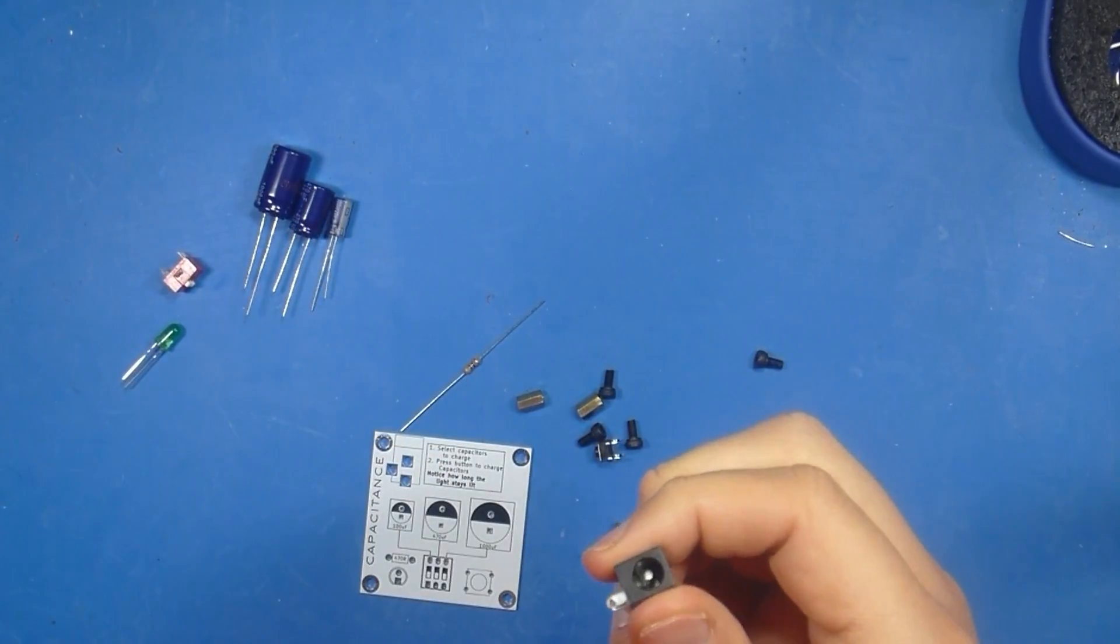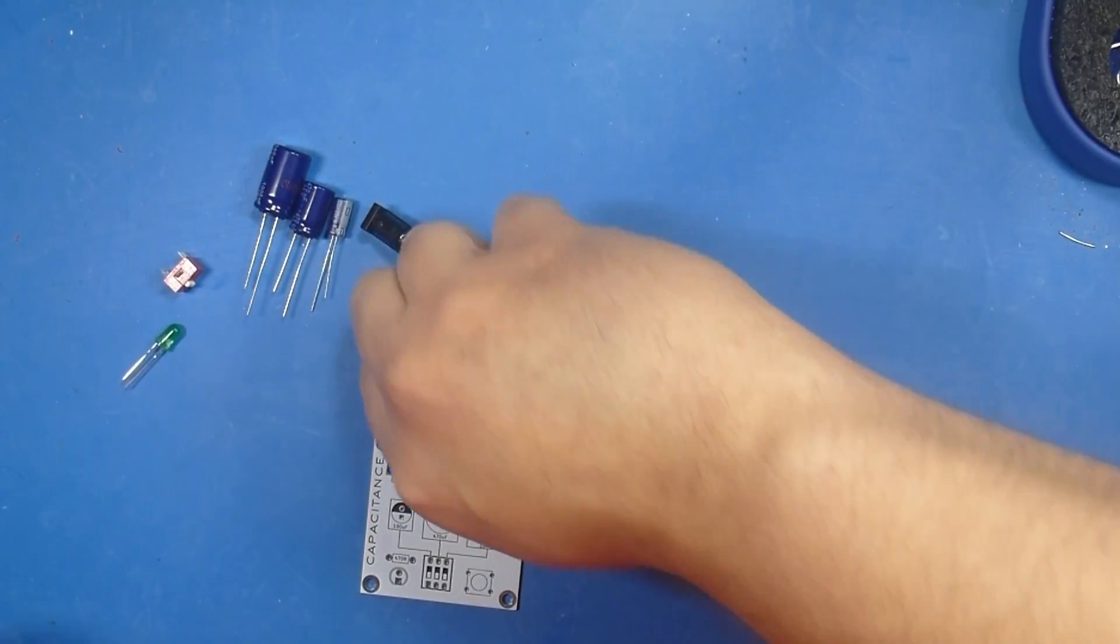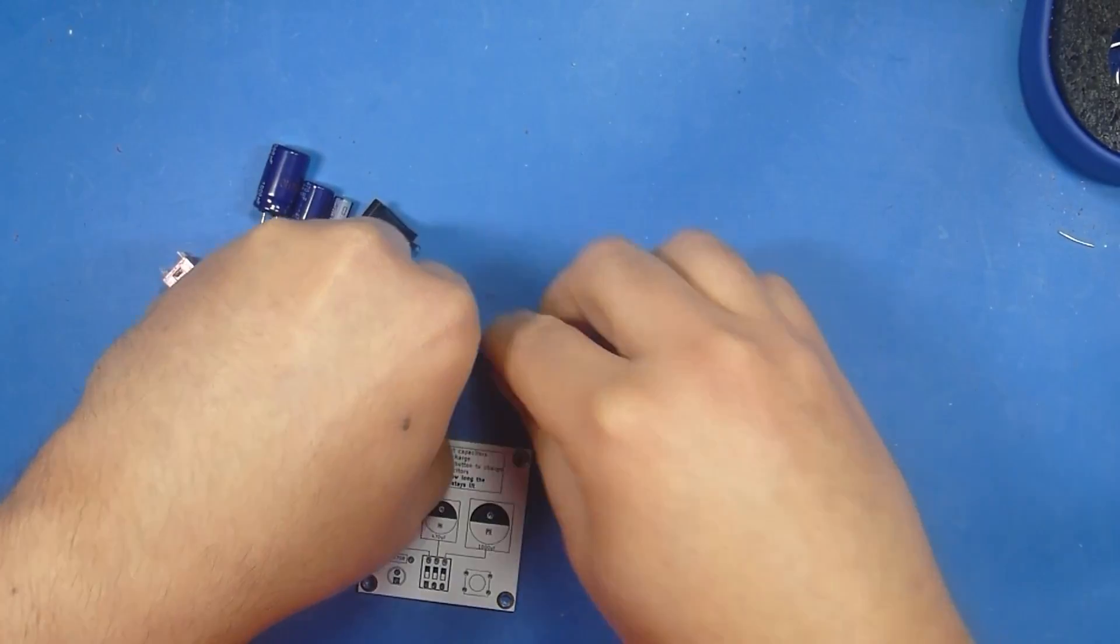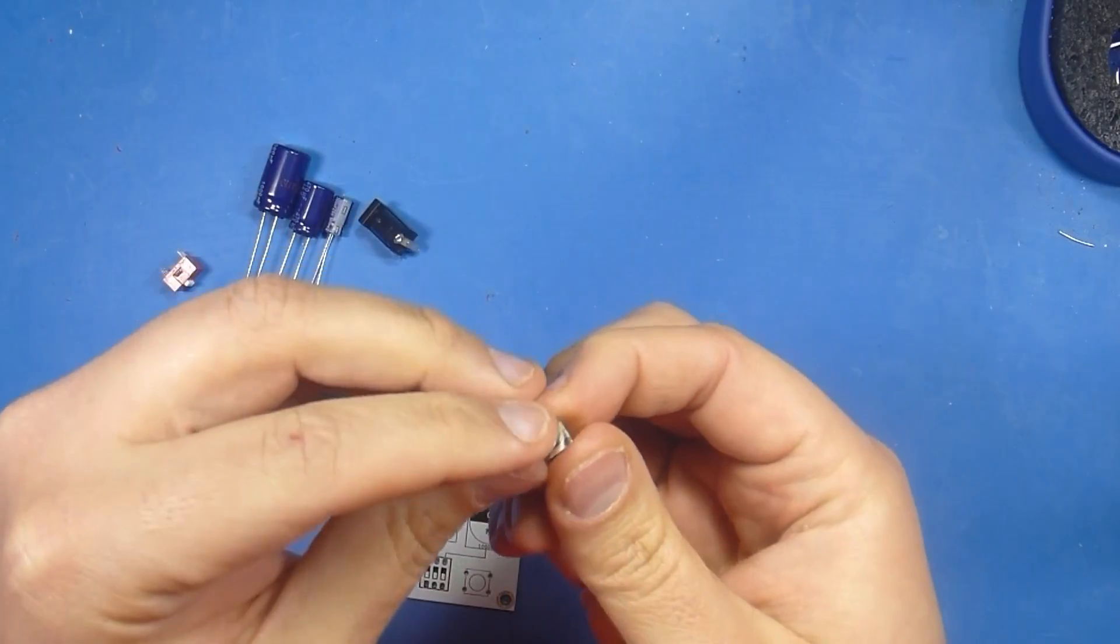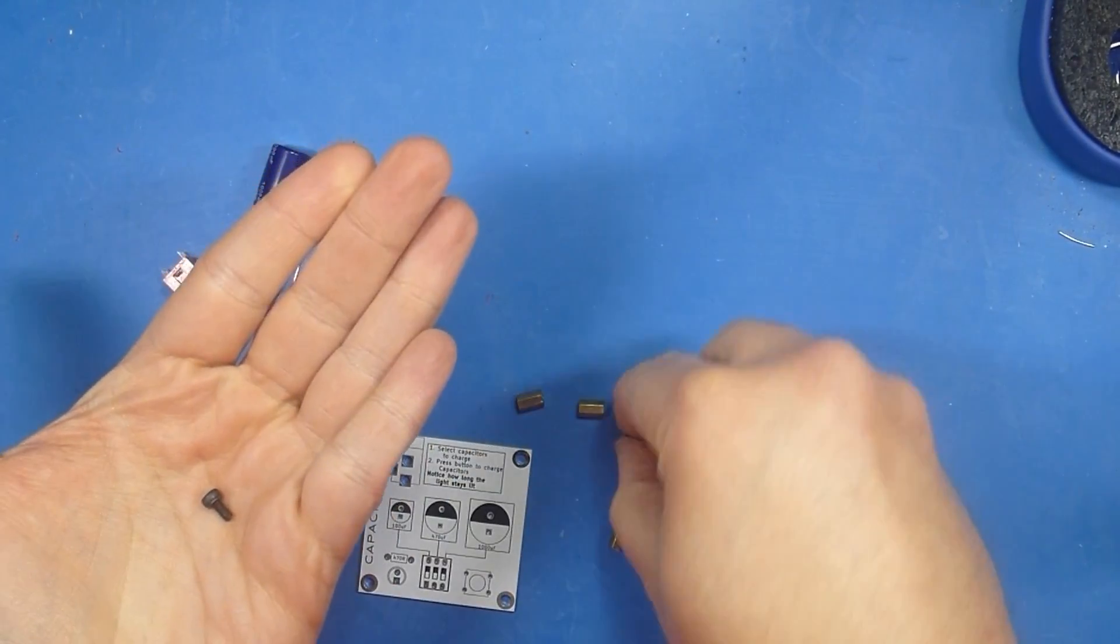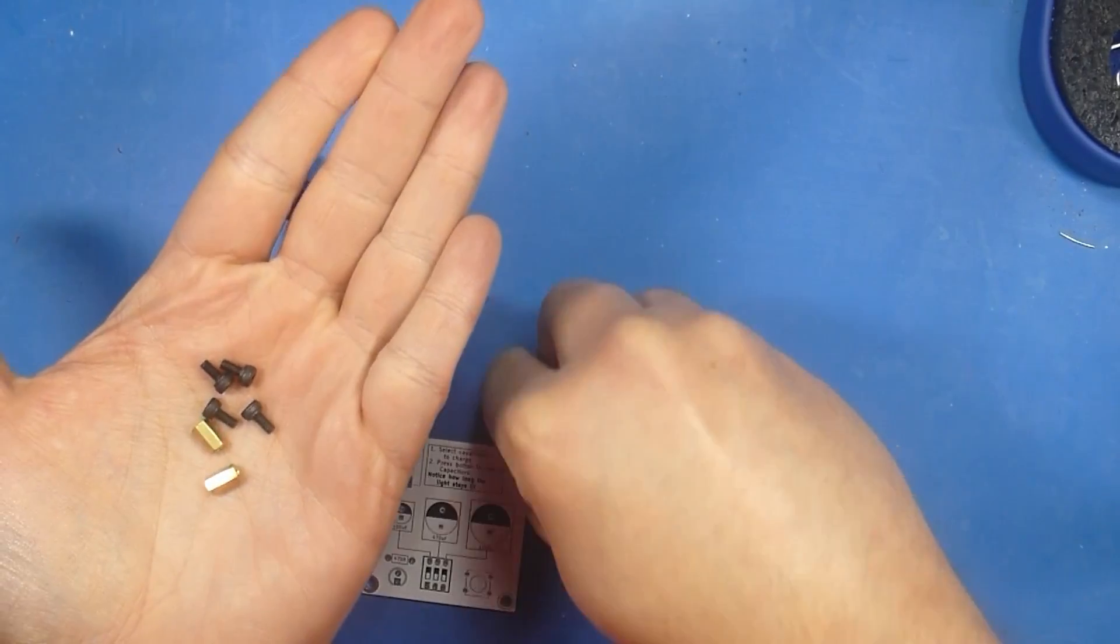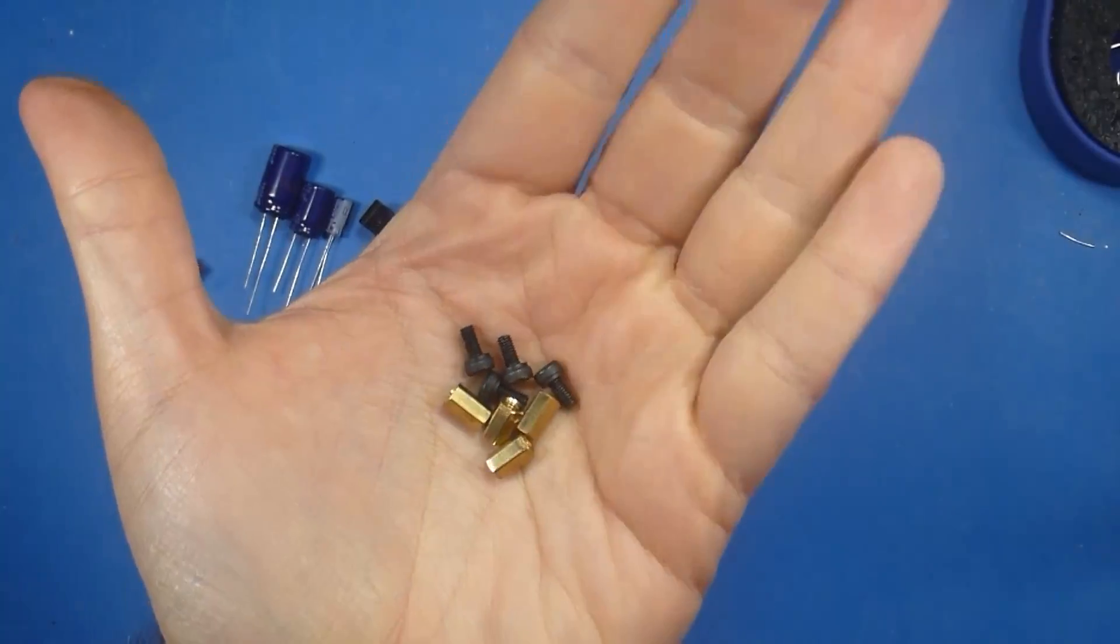Let's see what else do we have here. Our barrel jack connector. This is what will sit on the board that will plug into our 9 volt battery. You're going to have a 470 ohm resistor. Our tact switch or our push button. Then we're going to have four M3 screws and four hex standoffs. And we'll set those aside because we really don't need them until later.